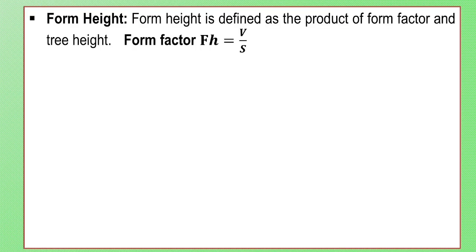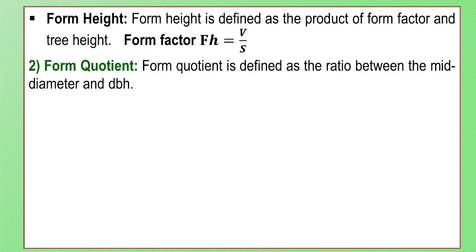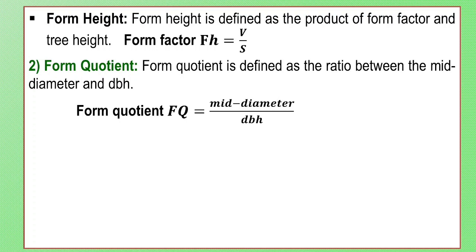Form Height is defined as the product of the form factor and the tree height. Since F equals V divided by S, then Form Height FH equals V divided by S. Form Quotient is defined as the ratio between the mid diameter and DBH (Diameter at Breast Height, which is 1.37 meters). Form Quotient equals mid diameter divided by DBH.